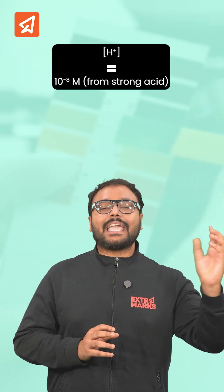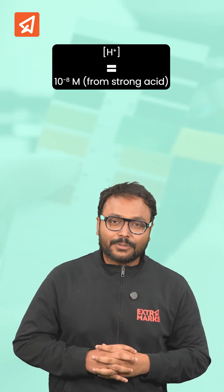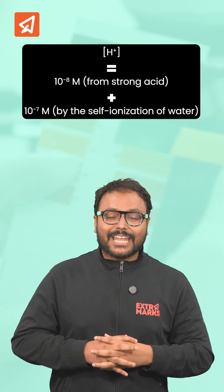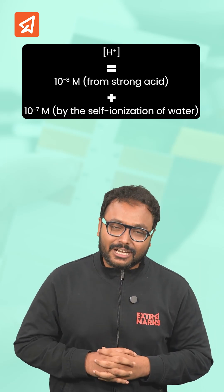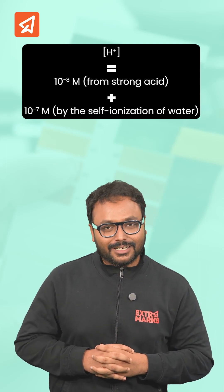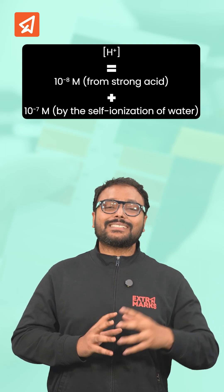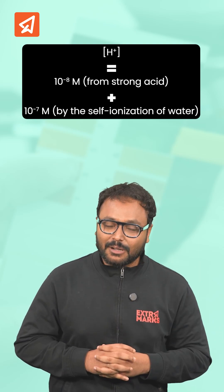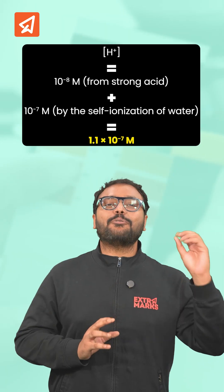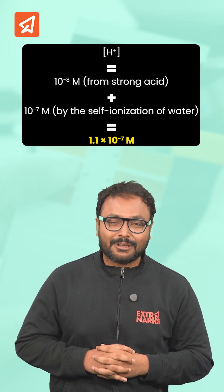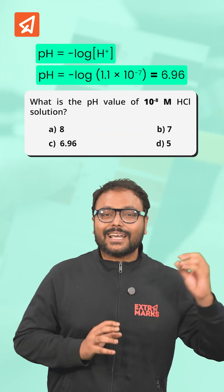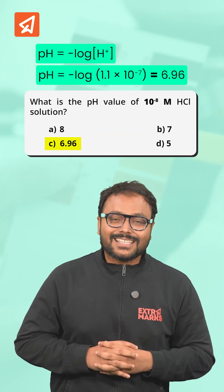So the total H⁺ concentration is 10 to the power minus 8 molar from the strong acid, plus 10 to the power minus 7 molar from ionization of water. The H⁺ concentration becomes 1.1 multiplied by 10 to the power minus 7 molar, so the correct pH answer would be 6.96.